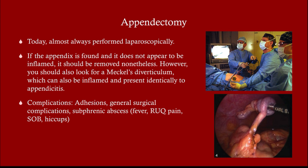Appendectomies are almost always performed laparoscopically in the US. If you find the appendix and it doesn't look inflamed, you still take it out — but you should then look for a Meckel's diverticulum, which could be the actual source of inflammation, especially in children. General abdominal surgery complications apply, and a unique one is subphrenic abscess: a patient who had recent abdominal surgery presenting with shortness of breath and hiccups suggests diaphragm irritation.